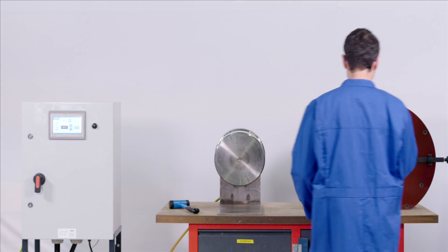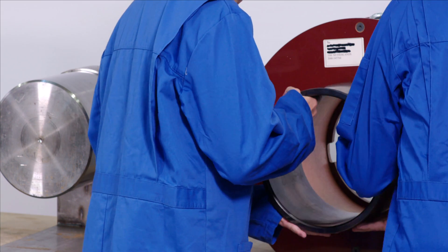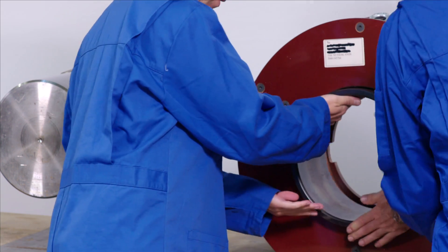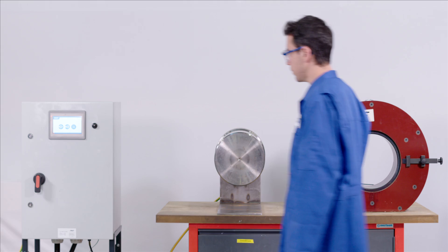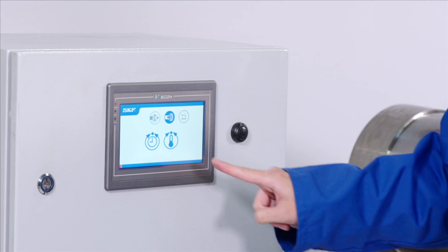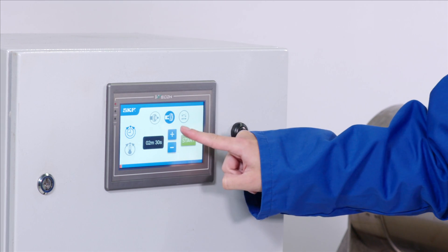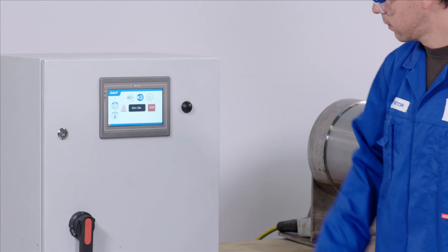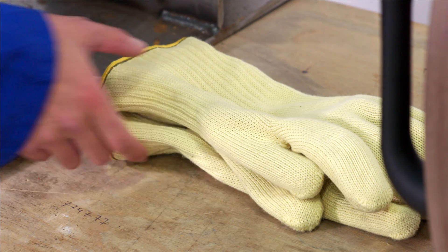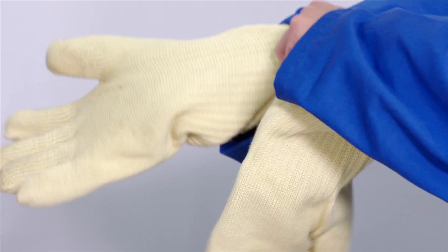To mount a ring to the shaft, place the bearing inner ring inside the EAZ coil. Select mounting mode on the control panel, then set the time or temperature and press start. Make sure you are wearing suitable heat-resistant gloves.